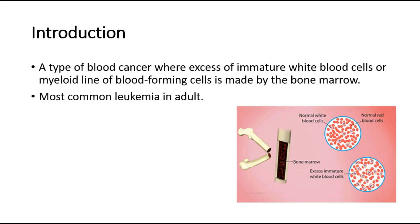Acute myeloid leukemia is a type of blood cancer where there is excessive immature white blood cells, or myeloid cells, made by the bone marrow. It is the most common leukemia in adults.